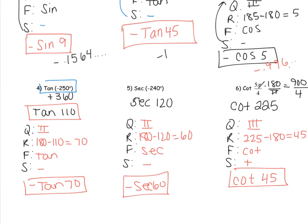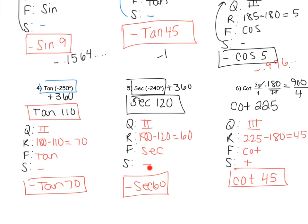For number 5, negative 240 plus 360 gives 120, so we work with secant of 120. That's quadrant two; the reference angle is 180 minus 120, which is 60. The function is secant. In quadrant two, S stands for sine being positive — and secant goes with cosine, not sine. So secant is negative.